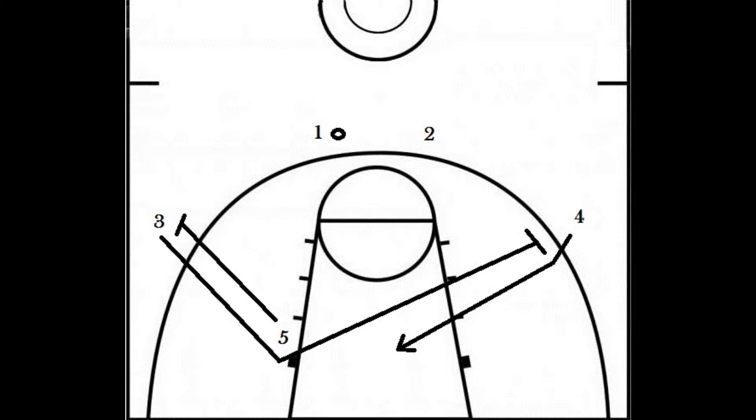First, player 5 will set a screen for player 3. Player 3 will then cut to the basket looking for a pass.